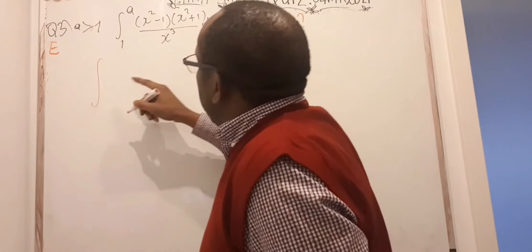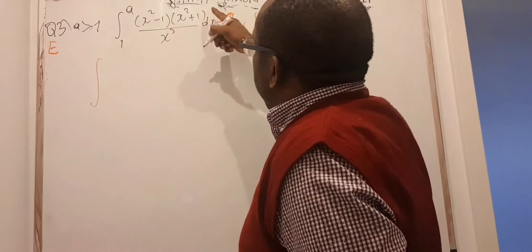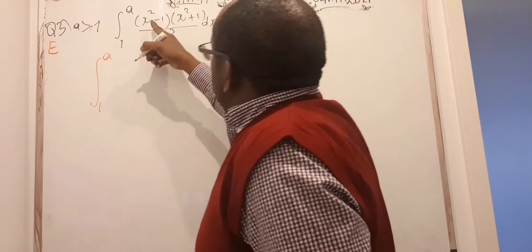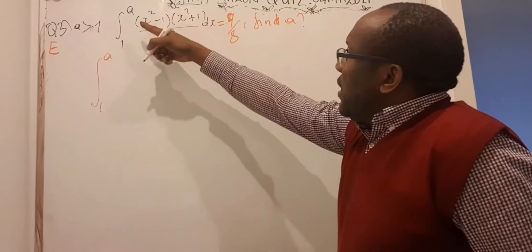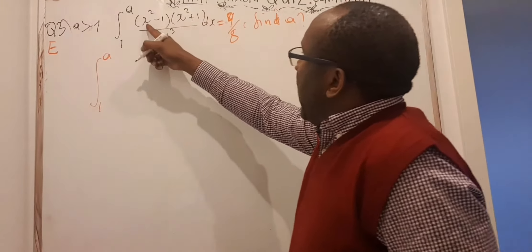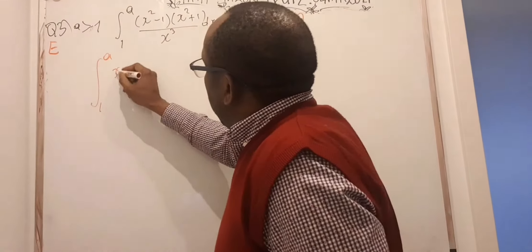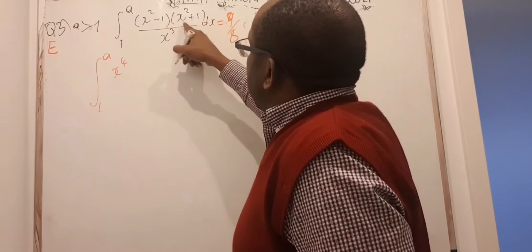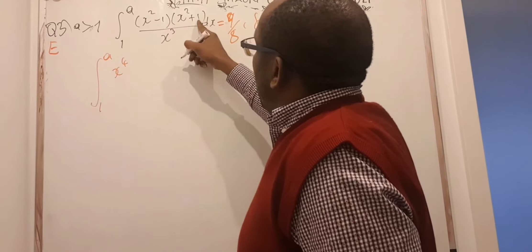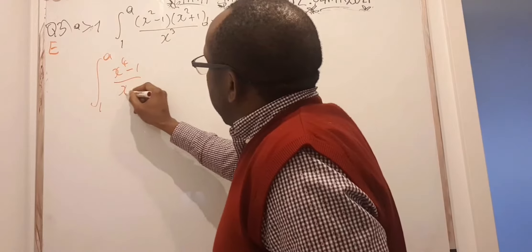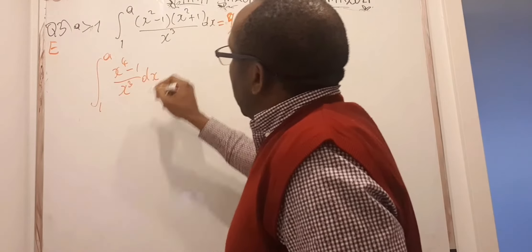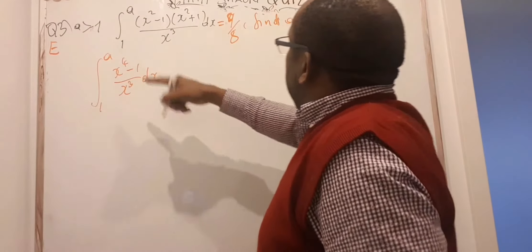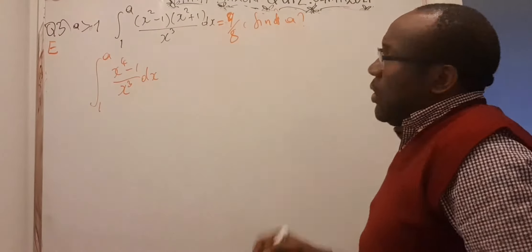This is the integration of a rational function — I have a polynomial on top and a polynomial below. I can make this a single function by expanding: it's just the difference of two squares. x² times x² is x⁴, and the middle terms cancel, leaving x⁴ − 1. So I need to integrate (x⁴ − 1)/x³, then equate it to 9/8 and solve for A.